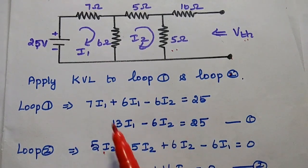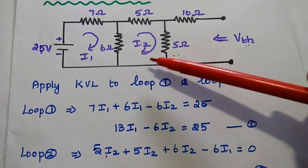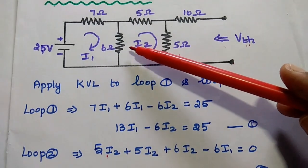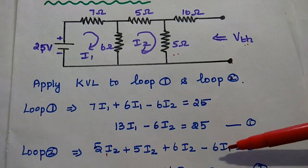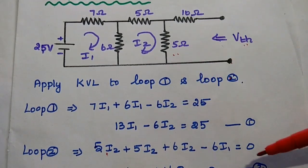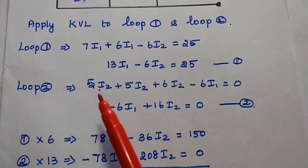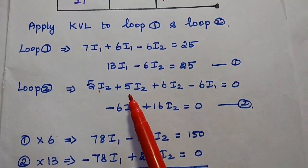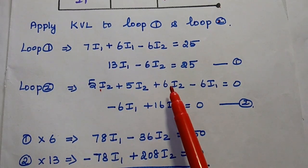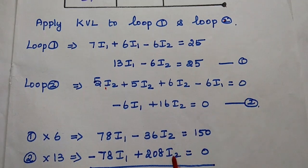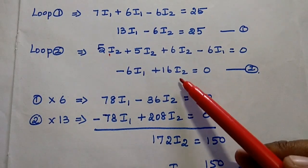Applying KVL to loop 2: starting from the reference point, we have voltage drops of 5I2 + 5I2 + 6I2, and a voltage drop due to I1 on the 6 ohm resistance in the opposite direction, giving minus 6I1. There is no voltage rise, so the equation equals 0. Simplifying: 16I2 − 6I1 = 0. This is equation 2. From these two equations we are going to find out the value of I2.